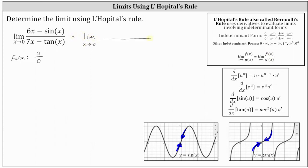The derivative of 6x minus sine x is equal to 6 minus cosine x, and the derivative of 7x minus tangent x is equal to 7 minus secant squared x. In this form, we can determine the limit by performing a direct substitution.